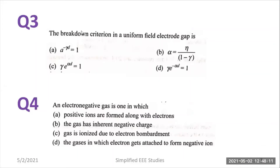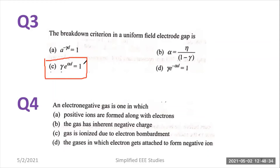Moving on to question number three: the breakdown criterion in a uniform field electrode gap is — which would be the right answer? We have derived the different conditions of breakdown — you can recall that portion. According to the breakdown condition for uniform field electrode gap, that is γ · e^(αd) = 1. This expression is derived from Townsend's current growth equation by considering secondary ionization. So you can select option C.